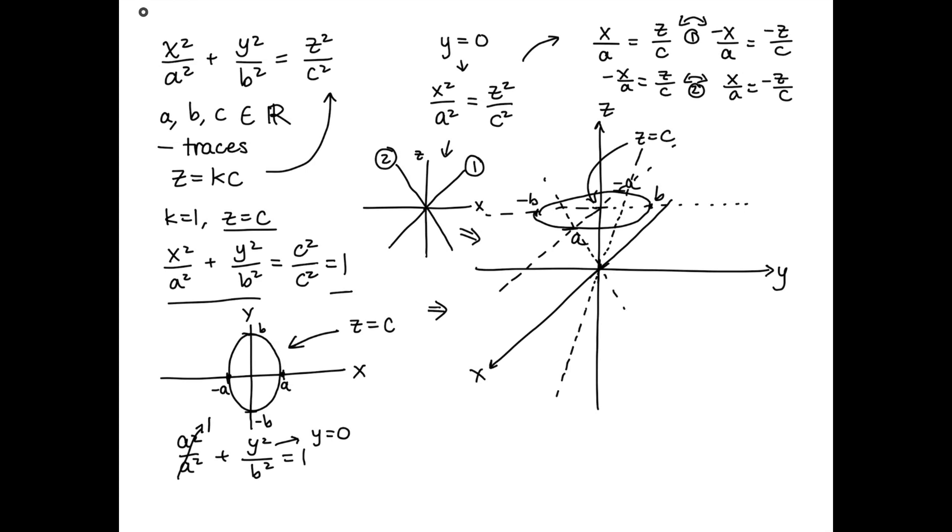And they're going to look something like this. And if we do a similar analysis for when x equals zero, we'll also get some lines. So that will look like this perhaps.